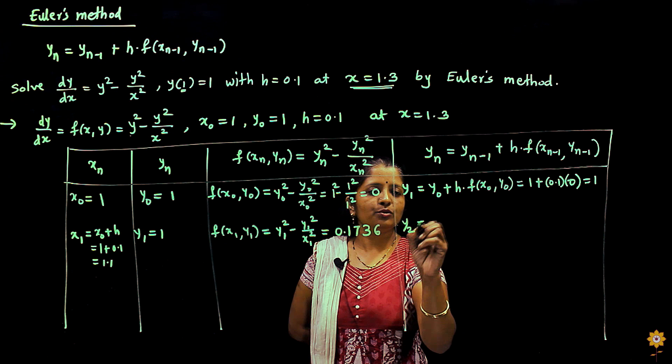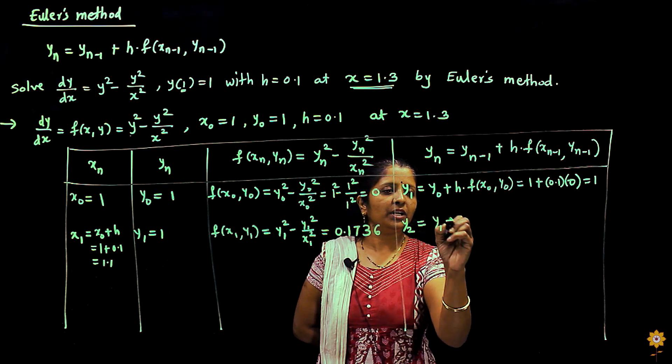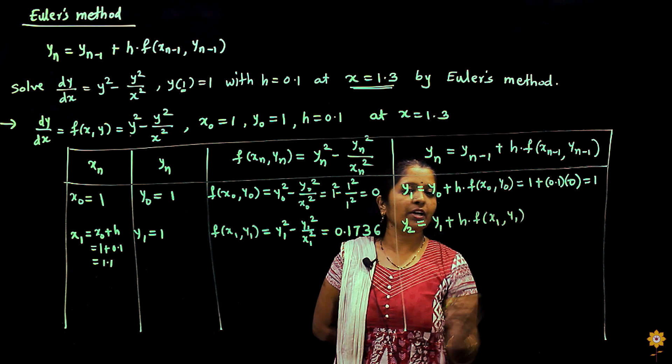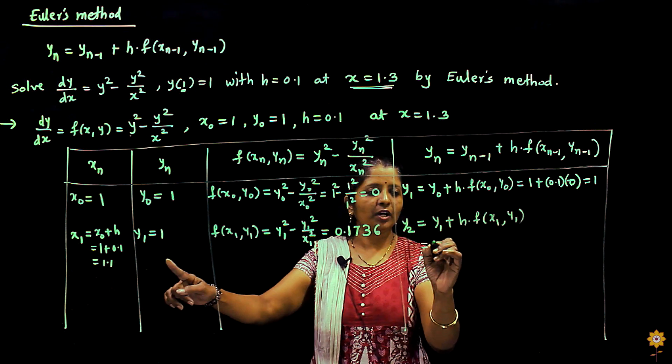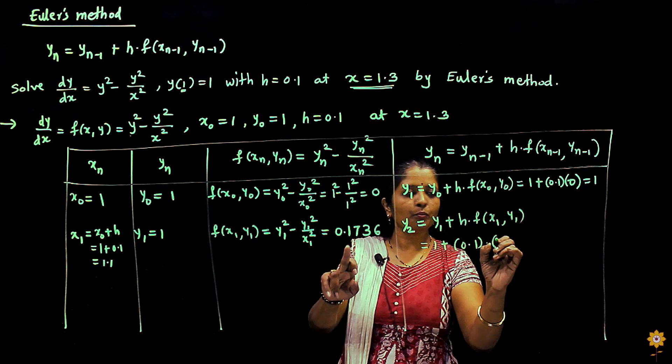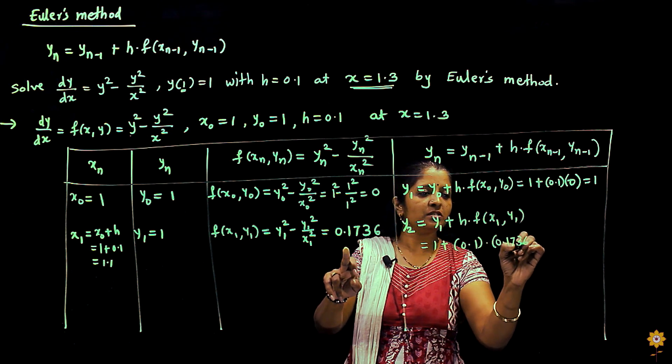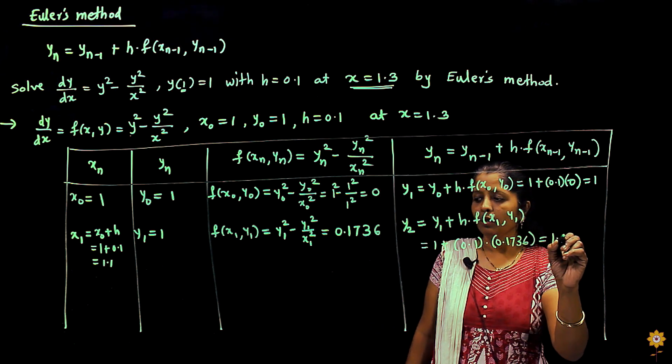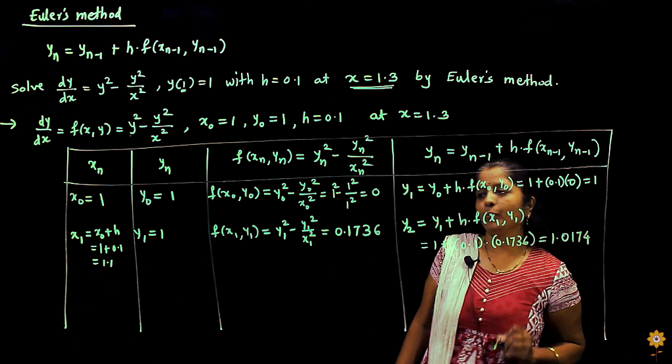Now you can use these values to get the value of y2. It is y1 + h·f(x1, y1). y1 is 1 plus h is 0.1 into 0.1736. After calculation you will get the value of y2 as 1.0174.